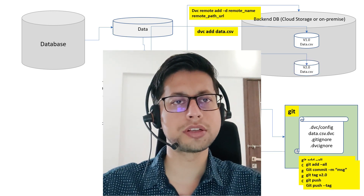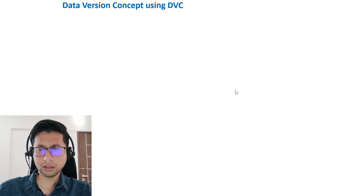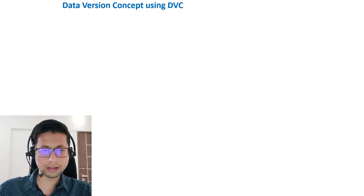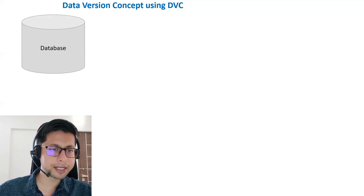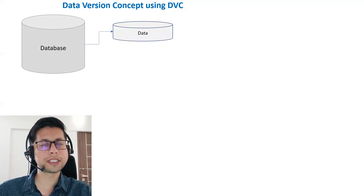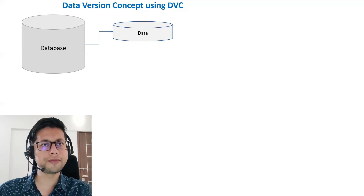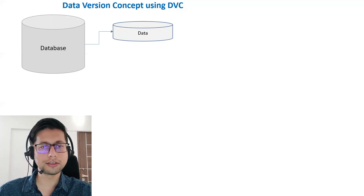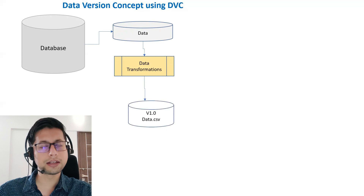Let's start. To understand data versioning, we'll start from the database. In machine learning, you have a data warehouse and from there you extract a sample of data. Then you start writing your training code and generate a model. That's the basic flow: you have data, apply certain transformations, and after transformations are done you create a final version of data.